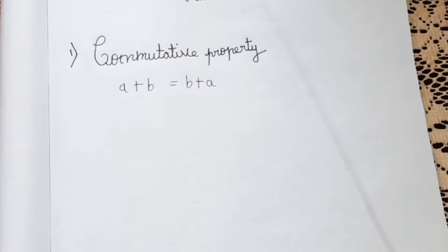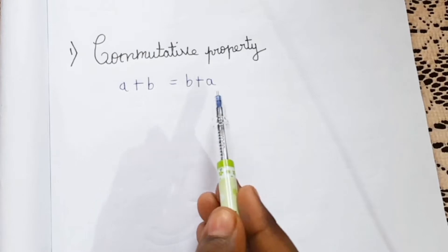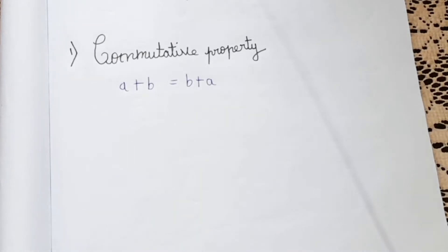First of all you guys might ask why did I write a plus b is equal to b plus a. So this is the property that we have to learn in commutative property. So first of all let me explain you what is this.